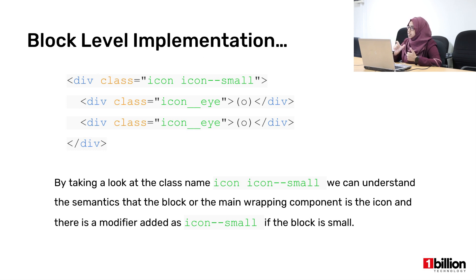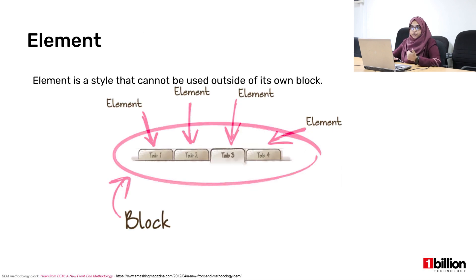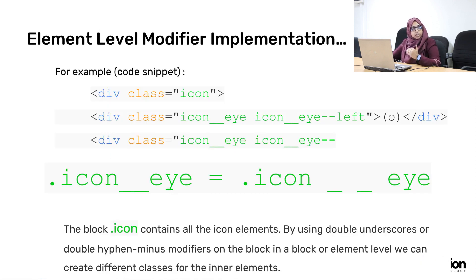Moving on to elements. As I mentioned, the element is your child aspect within the block. How we do that is: within the icon block, you create the class 'icon__i' — two underscores — because we have the child aspect within the icon. So the element class name will be with two underscores. If I want to add a modifier to the element level, it will be 'icon__i--left' — two underscores for the element and two hyphens for the modifier.